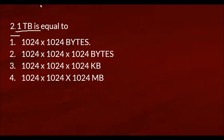If we are using this: 1024 bytes equal to 1 KB. 1 KB into 1024 equals 1 MB. 1 MB into 1024 equals 1 GB. This is 1 TB. 1024 bytes gives 1 KB, then 1 MB. It's the same — 1024. 1024 KB is equal to 1 MB. 1 MB into 1024 is 1 GB. 1 GB into 1024 is 1 TB.